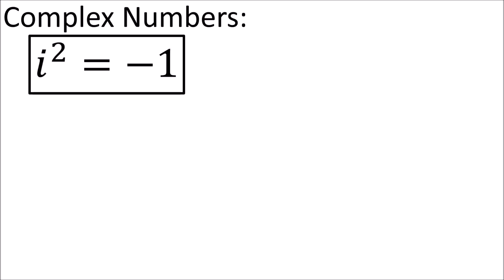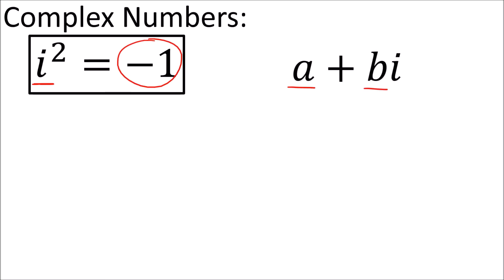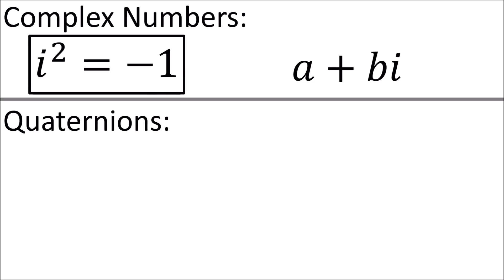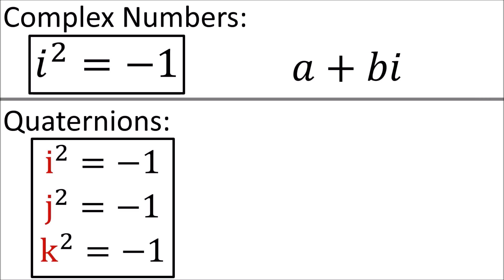Hopefully you know that the imaginary number i is defined such that i squared equals negative 1. This allows us to write complex numbers of the form a plus bi, where a and b are real coefficients. Quaternions are like an extension of the complex numbers where we have three imaginary units i, j, and k, each of which squares to negative 1.